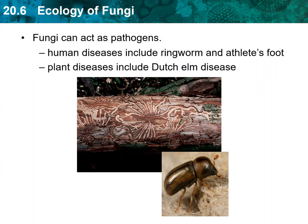Fungal diseases in agriculture are often treated with chemical sprays called fungicides. Today, however, crops that are genetically engineered to resist fungi are becoming more common. Fungal diseases in animals, including those in humans, are usually treated with antifungal medications. These treatments usually come from fungi themselves, which produce them as a defense against other fungi. Like bacteria and protists, however, fungi can develop resistance to treatments if they are overused. These products should be used carefully.